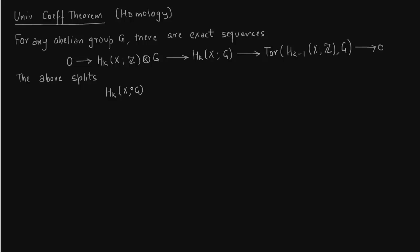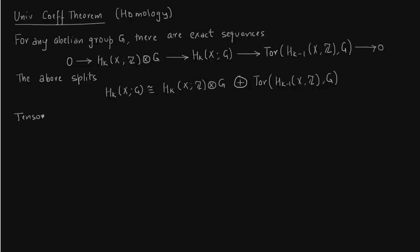We want to compute the homology group H_k with coefficients in G. As computed before for the torus in integers, we now want to go from integers to some other group G. The first term is H_k(X, Z) tensored with G. The second part involves the Tor term with H_{k-1}. This will be clear from the example on the next slide, but first let us write down the properties of tensor product.